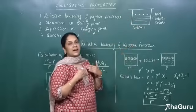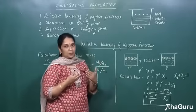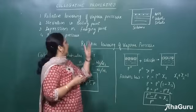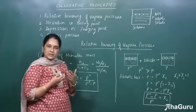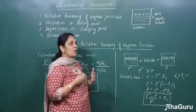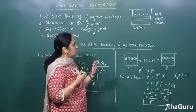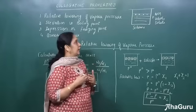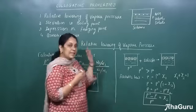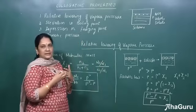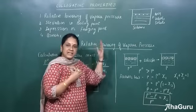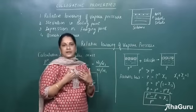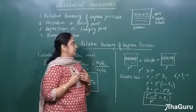The vapor pressure will decrease because some positions on the solvent surface are occupied by the solute molecules. Similarly, other physical properties like boiling point, freezing point, and osmotic pressure will all change when we add a non-volatile solute to the solvent.